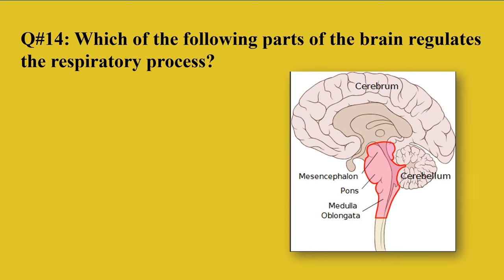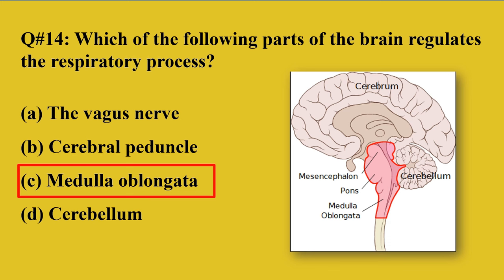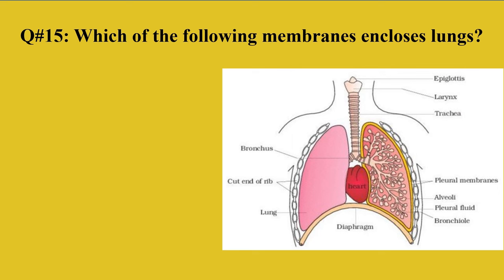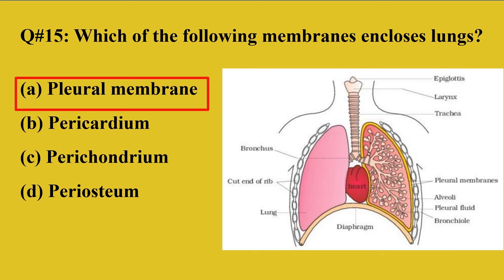Question number 14: Which part of the brain regulates the respiratory process? A: the vagus nerve, B: cerebral peduncle, C: medulla oblongata, D: cerebellum. The right option is C, medulla oblongata. The medulla oblongata is the part of the brain that regulates respiration. Question number 15: Which of the following membranes encloses the lungs? A: pleural membrane, B: pericardium, C: perichondrium, D: periosteum. The right option is A, pleural membrane. The pleural membrane surrounds and encloses the lungs, and contains pleural fluid which protects the lungs from damage or injury.